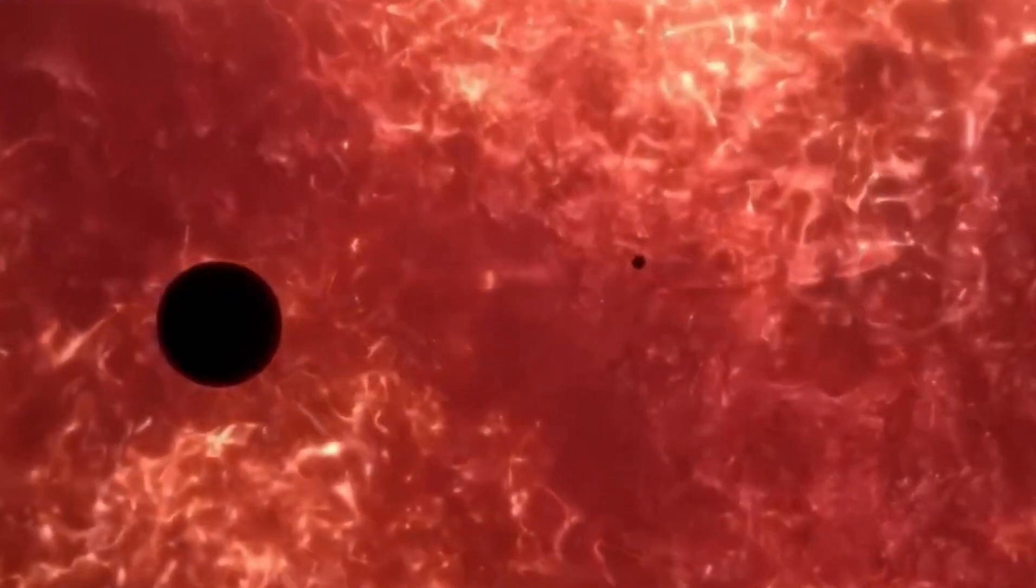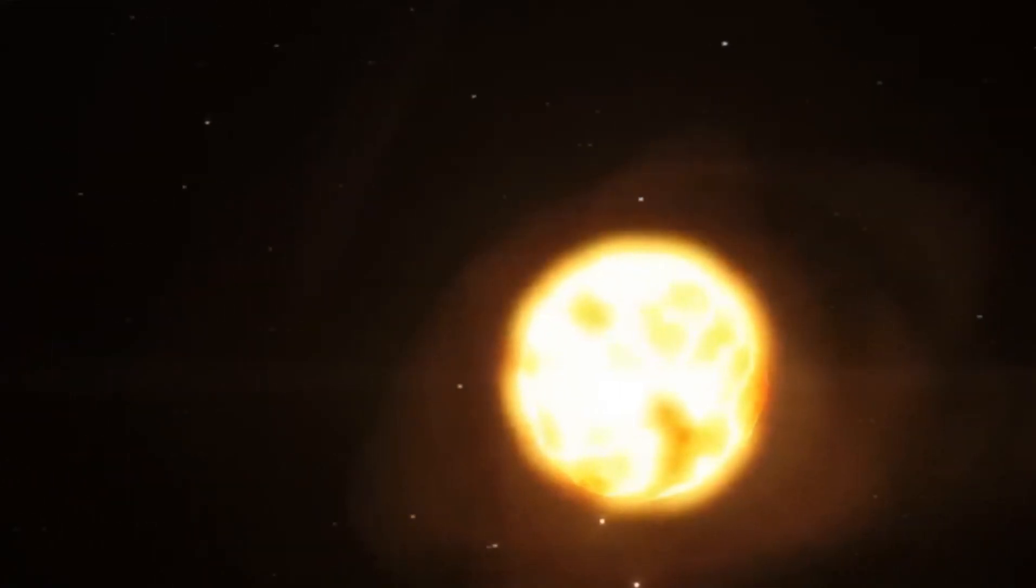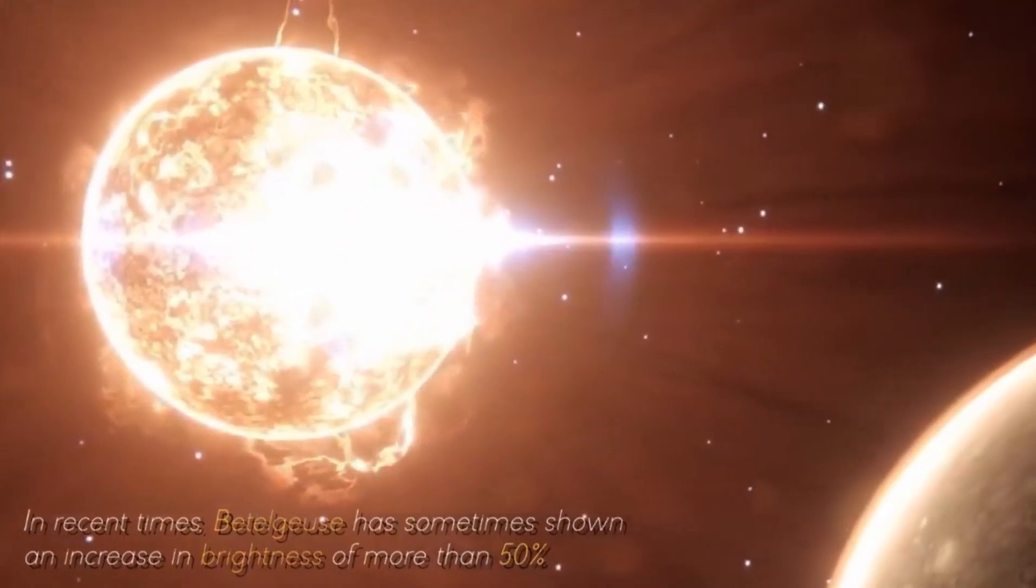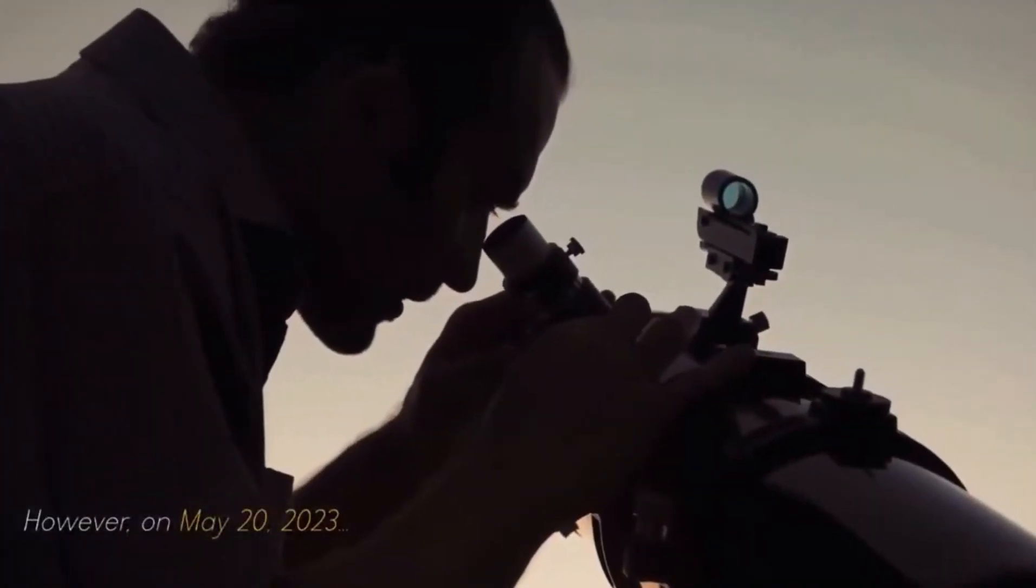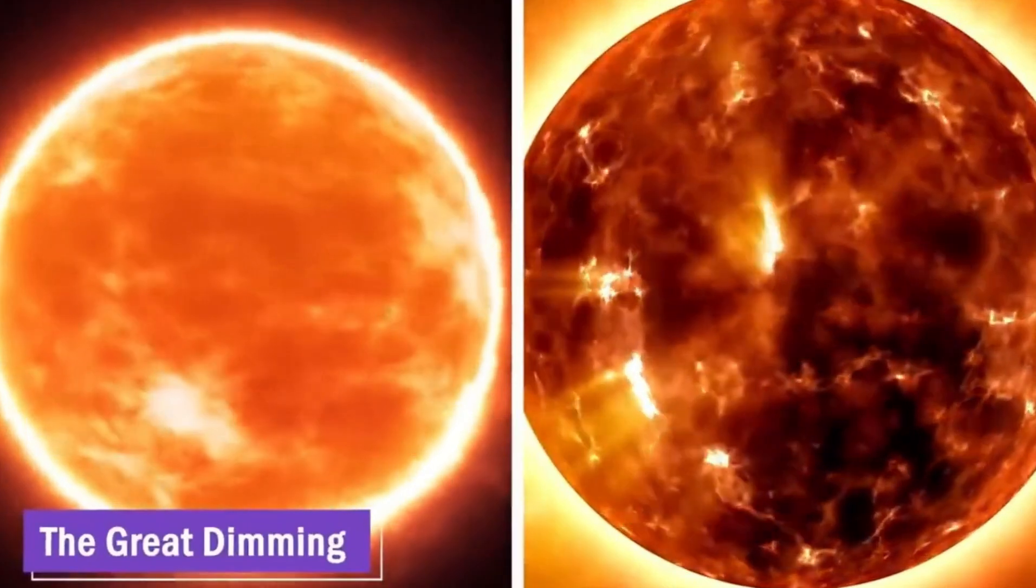When the moment arrives, the initial signs of the supernova's arrival will be subtle yet unmistakable, with neutrinos sweeping over Earth as high-energy photons escape from the expanding cloud of stellar debris. Betelgeuse will gradually grow brighter in the night sky, potentially reaching peak brightness 10,000 to 100,000 times its normal brilliance within just one week.